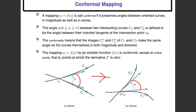If f(z) is an analytic function, then the mapping is conformal except at critical points. A point is said to be a critical point if f'(z) = 0 at that point. So except at critical points, analytic functions are always conformal.